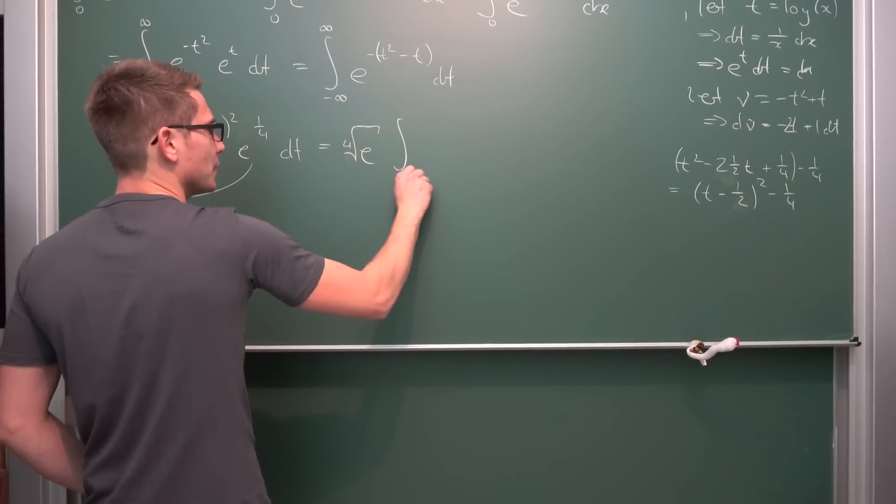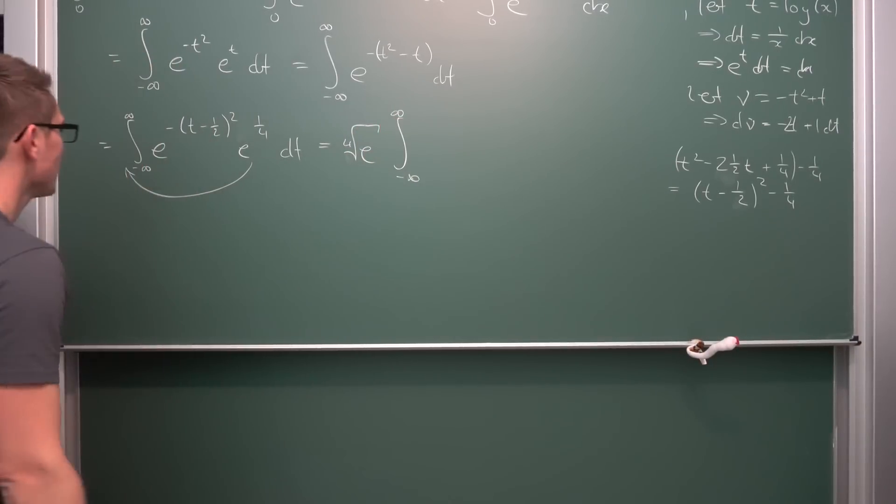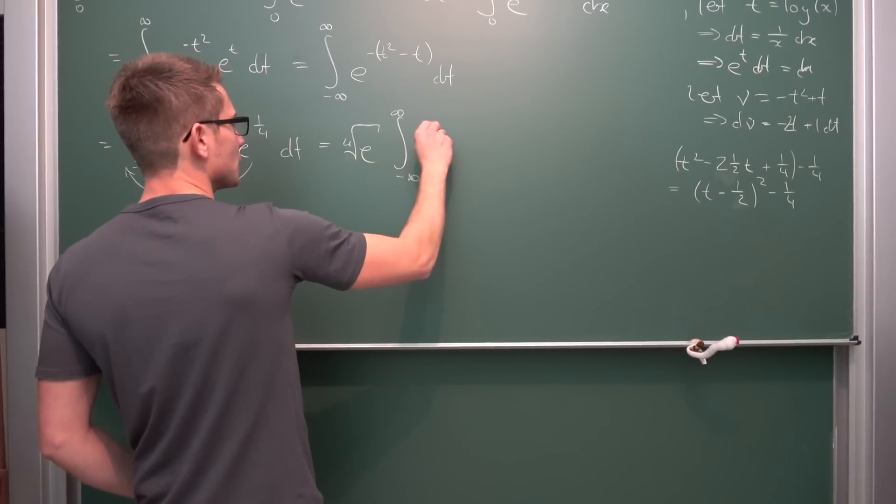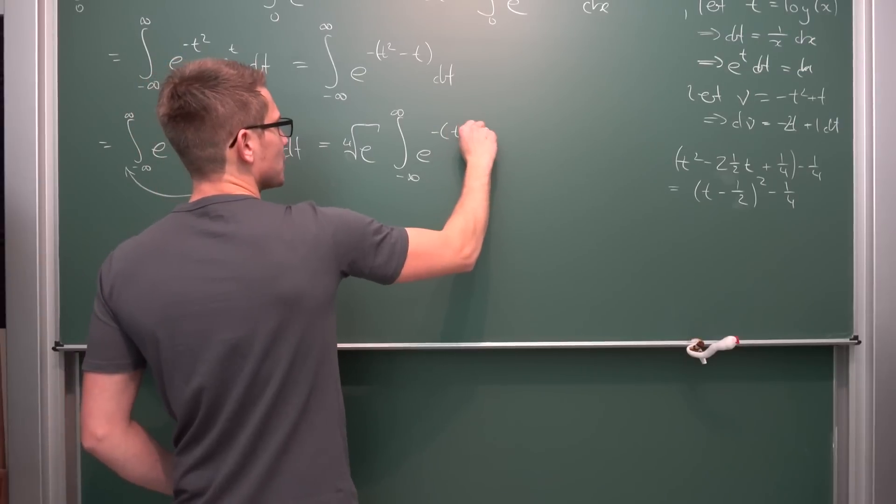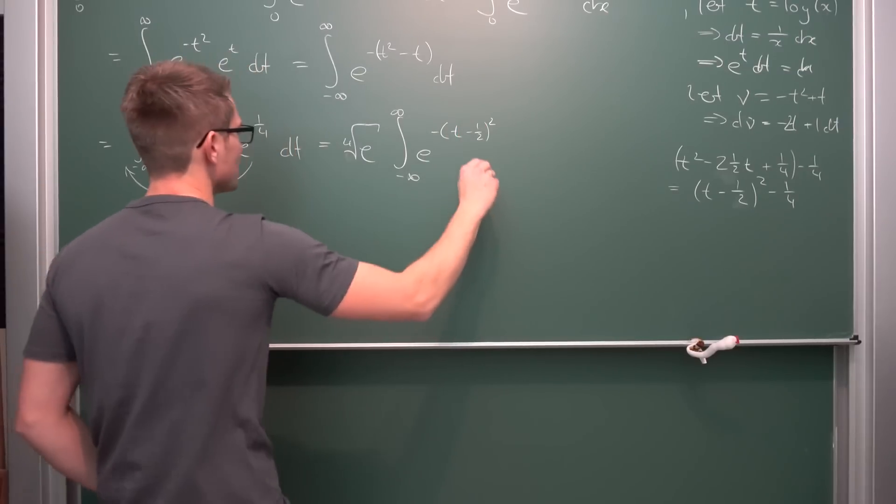Times the integral from negative infinity to infinity of e to the negative (t minus 1 half) squared dt.